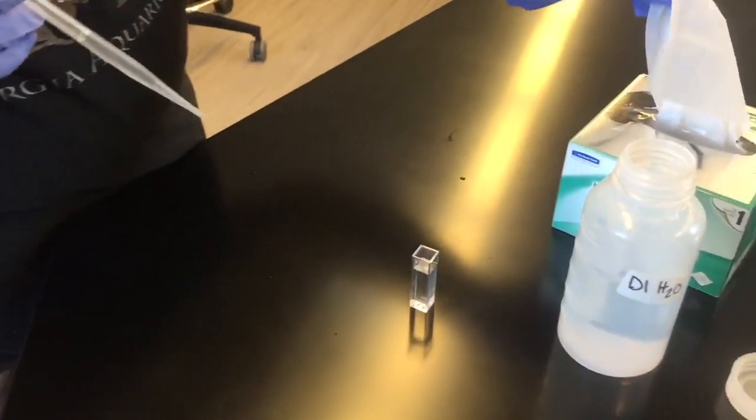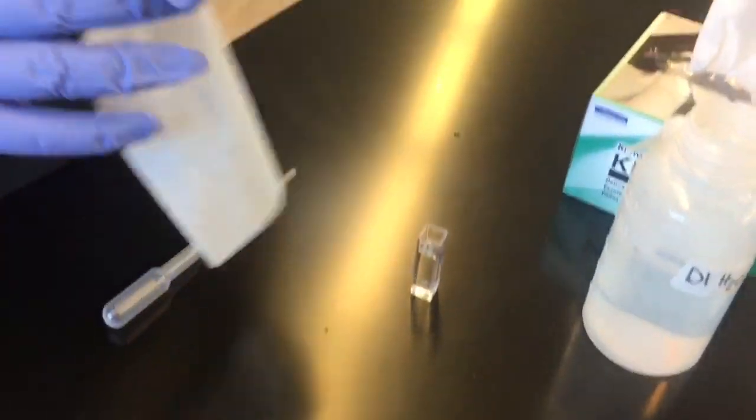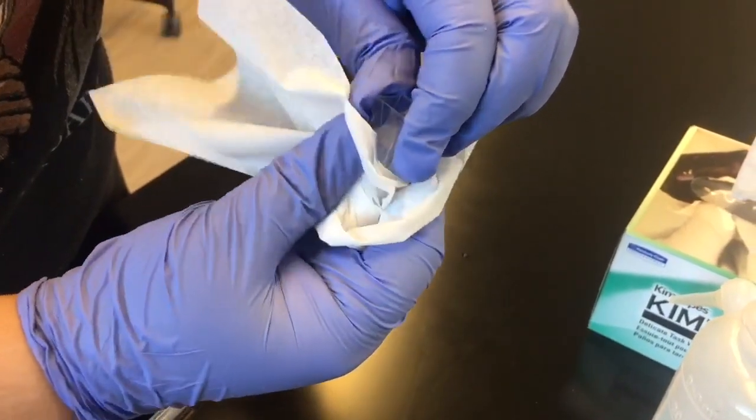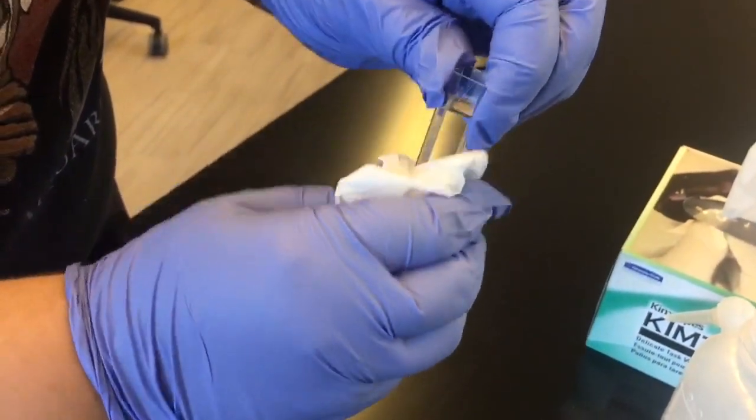What you're going to do next is take a Chemwipe and wipe all around the cuvette to make sure that you do not have any fingerprints or dirt of any kind.